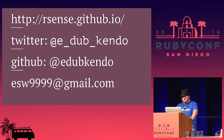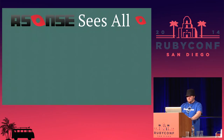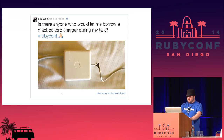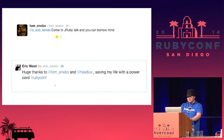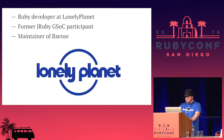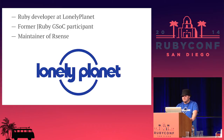Hi, my name is Eric West. Before I start, I just have to say thanks — I had a tragedy this morning. I discovered the insulation had been burned through where the wires had gotten frayed. Pretty horrible. But thankfully I got a little help from some friends. I'm a Ruby developer at Lonely Planet, a former JRuby Google Summer of Code participant, and currently the maintainer of R-Sense.